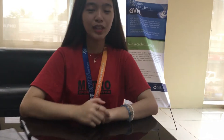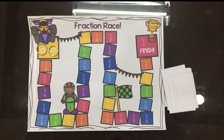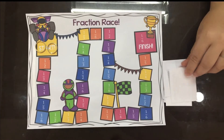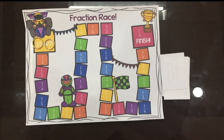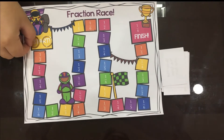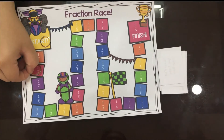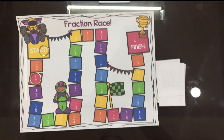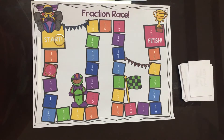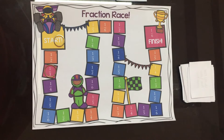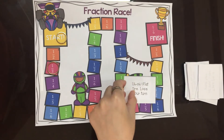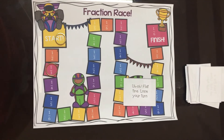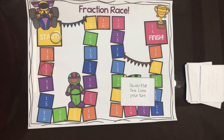They then reduce the fraction and move their game piece to the closest square containing the solution. The next player then draws a card and plays the same way.